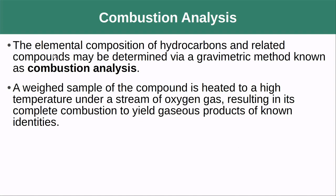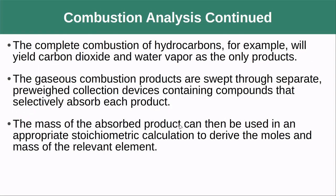We've seen before elemental data that told us the percentage of certain elements in a compound. One way to get that is through combustion analysis, and this is typically done as a gravimetric technique, although it can also be done using a spectroscopic technique. Basically, we take a weighed sample of the compound, heat it to a high temperature under a stream of excess oxygen gas, and it burns up, yielding gaseous products of known identity. We then trap those gaseous products in some sort of solid substrate, and by seeing how much heavier those substrates got, we can figure out the mass of those gases produced.